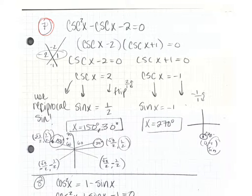So for problem 7, once we get all terms on one side, we can think of this as x squared minus x minus 2. What factors multiply to negative 2, add to negative 1? Negative 2 and 1. So you could think of this as x minus 2 times x plus 1, but in the x spot we're going to replace it with cosecant x.